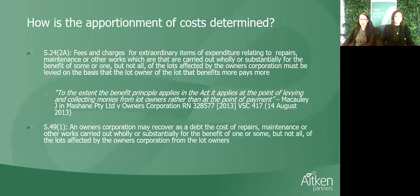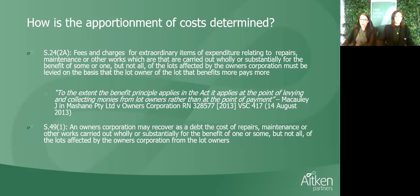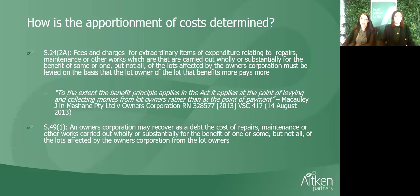How the apportionment of costs is determined. The benefit principle appears a number of times in the Owners' Corporation Act, starting with Sections 24-2A and 49-1. Section 24-2A provides that fees and charges for ordinary items of expenditure relating to repairs, maintenance or other works which are carried out wholly or substantially for the benefit of some or one, but not all of the lots affected by the owners' corporation, must be levied on the basis that the lot that benefits more pays more. Section 49-1 further provides that an owners' corporation may recover as a debt the cost of repairs, maintenance or other works carried out wholly or substantially for the benefit of one or some, but not all of the lots affected by the owners' corporation from those lot owners. The Owners' Corporation Act was amended in late 2013 to include these provisions after the decision in the Mishane case was handed down.